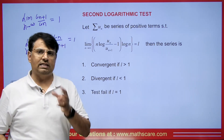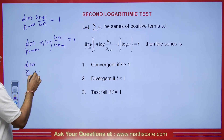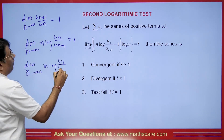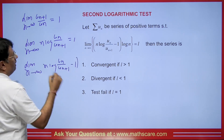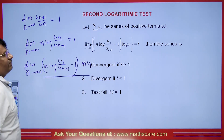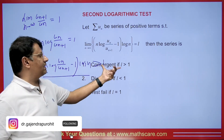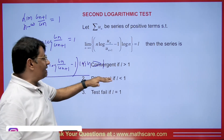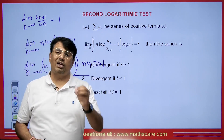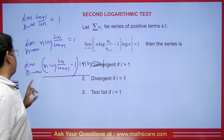If its value also comes to 1, then this test also fails. So what will we do next? We will find the value of limit n→∞ of [n·log(U_n / U_{n+1}) − 1] × log(n). If we get this value greater than 1, then the series will be convergent. If it comes less than 1, it will be divergent. And if it comes equal to 1, then the test will fail again.